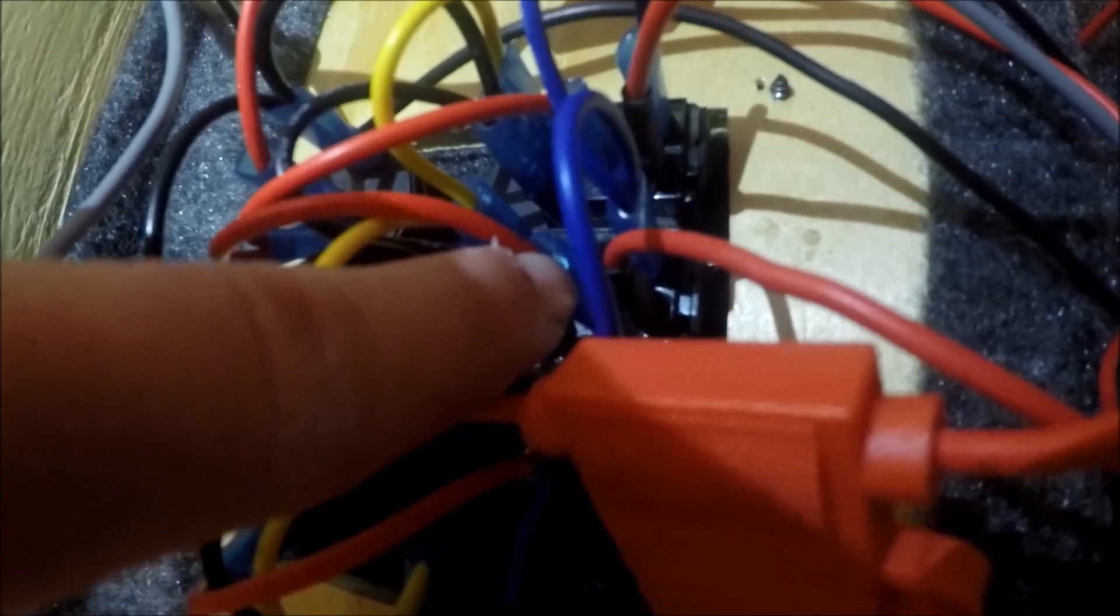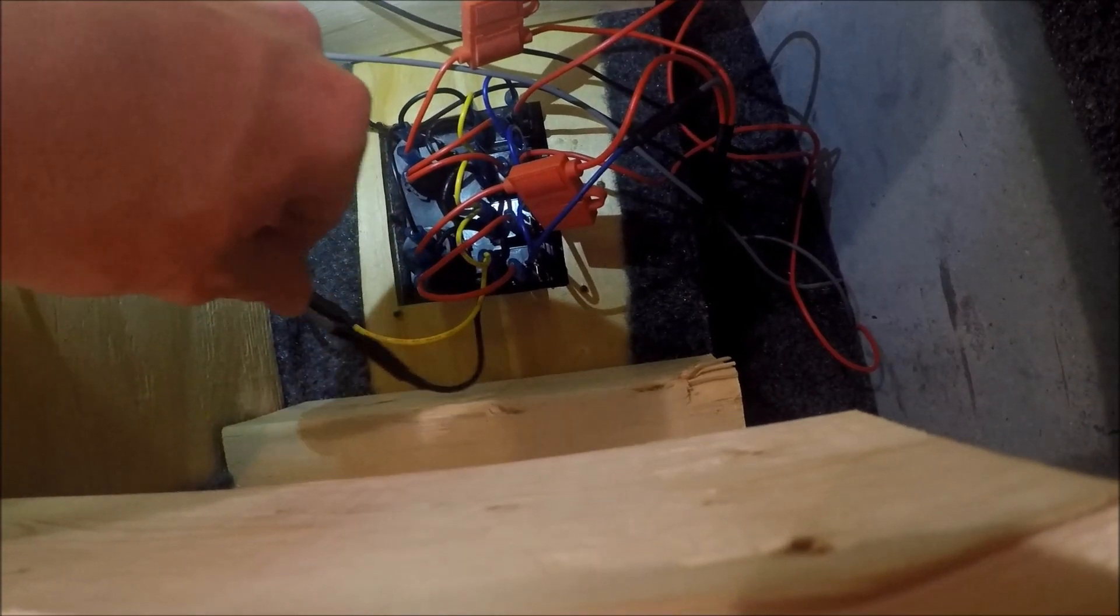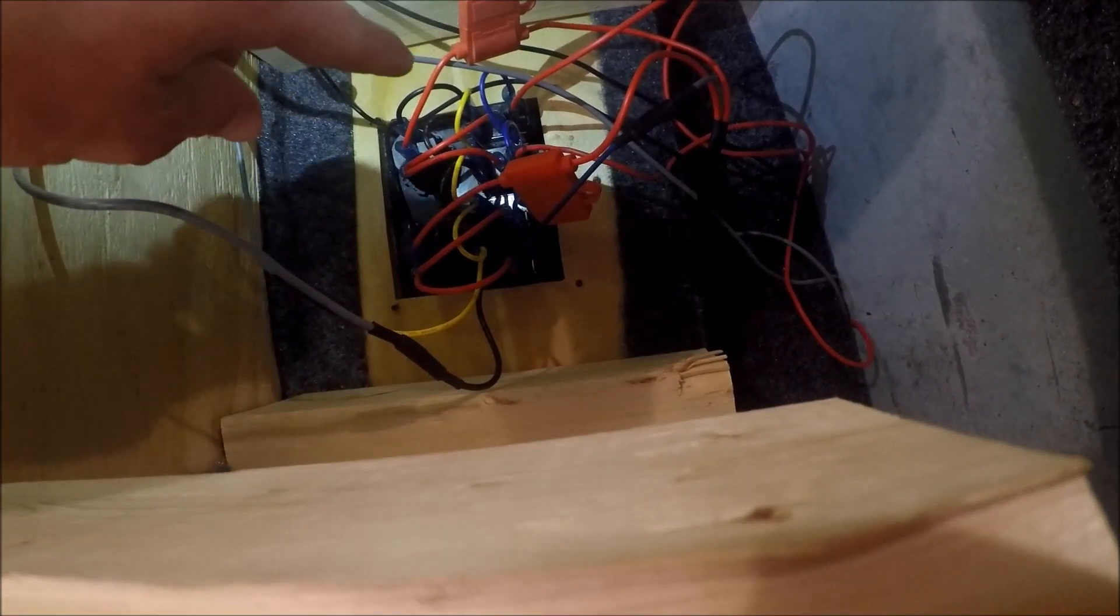And then there's switch two, three, and four. You can see it's open right here and right here. So I could run two more things in this boat. However, I have my rear nav here and my front nav right there. The black wire is your negative and the red is your positive.